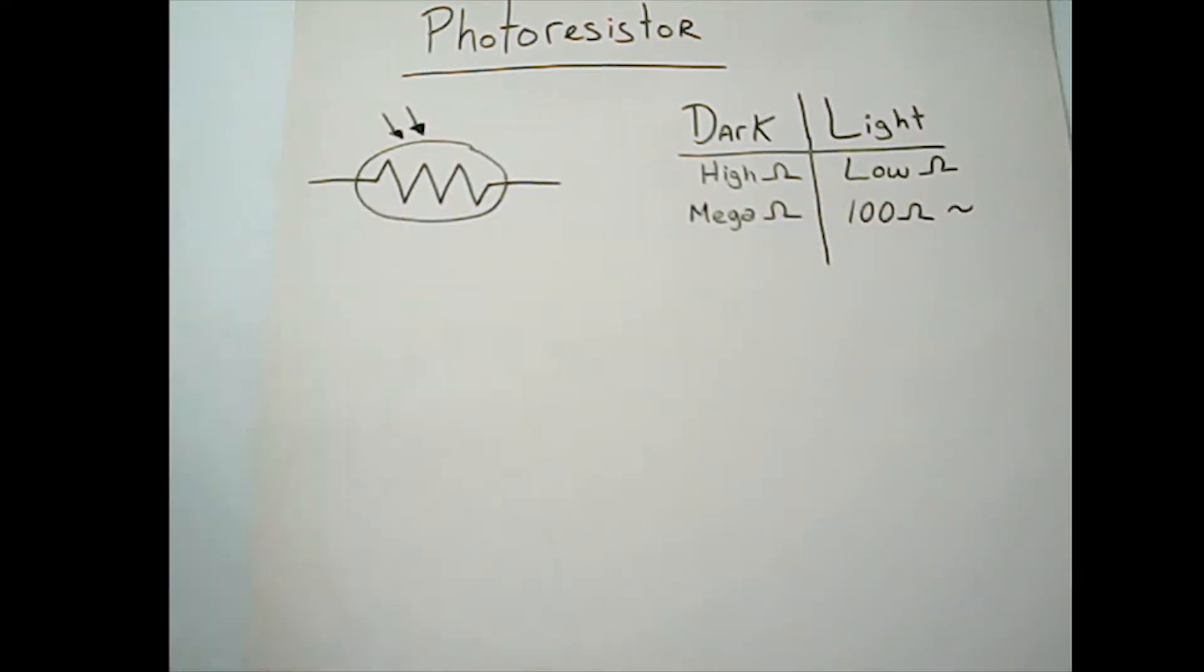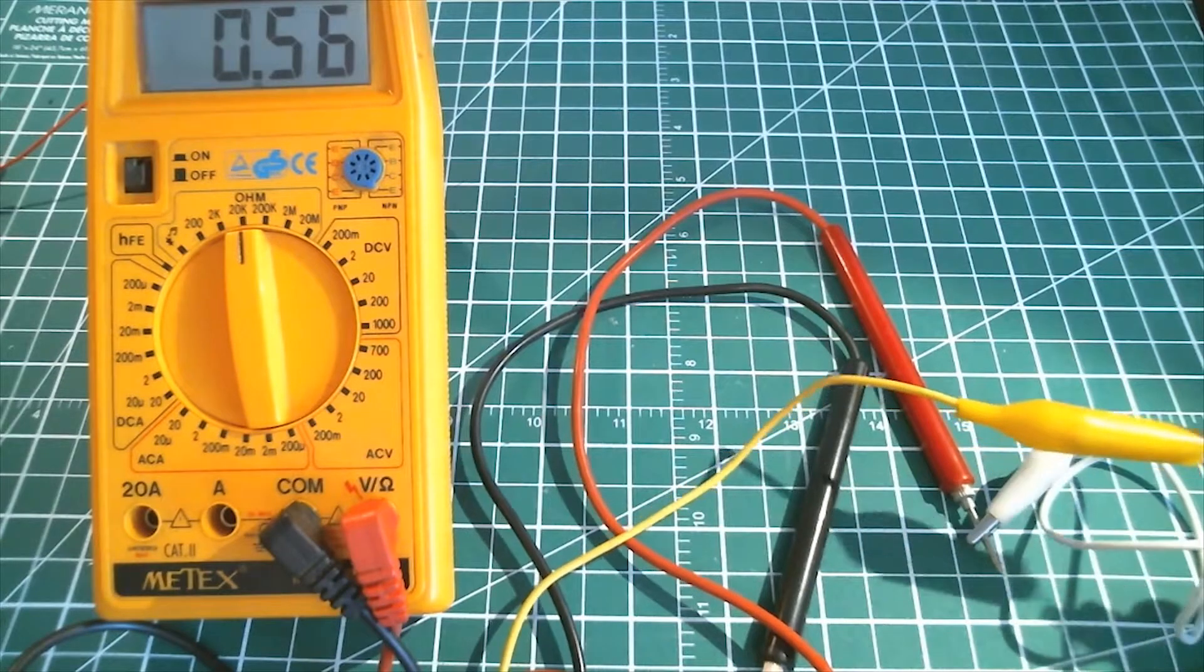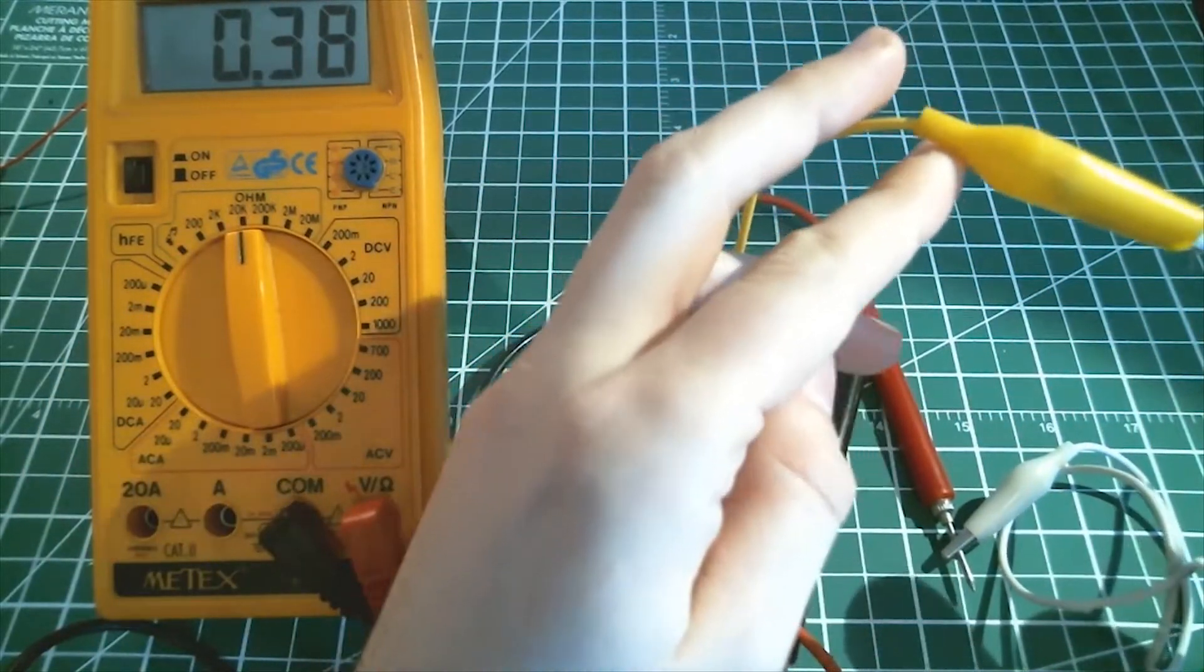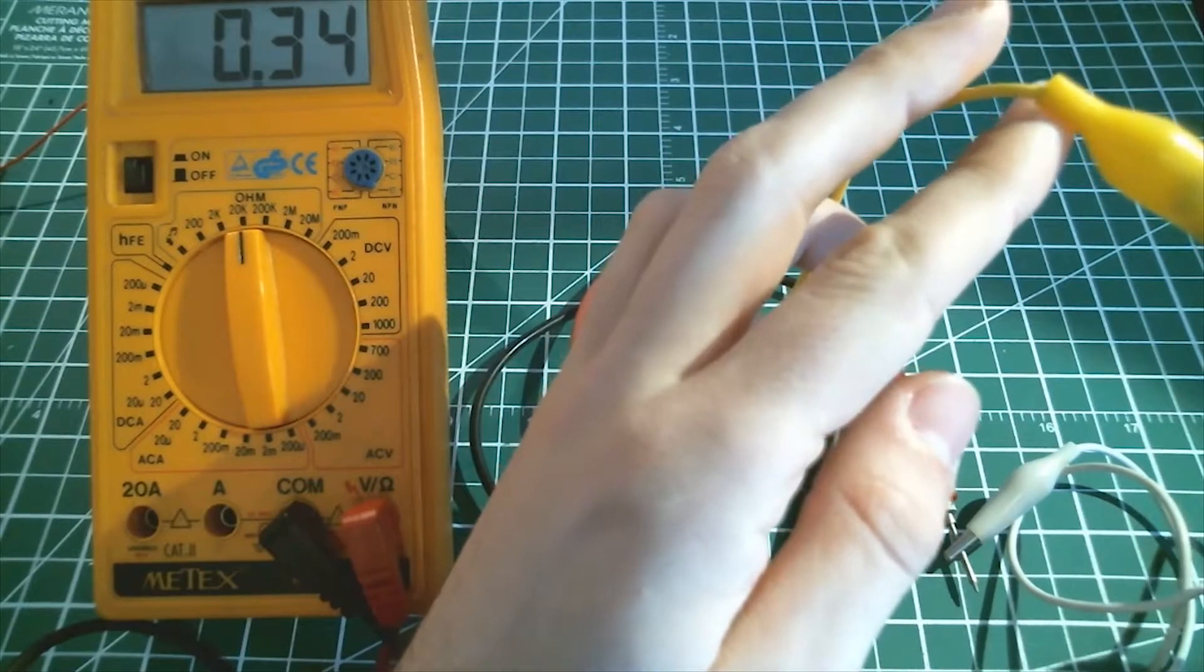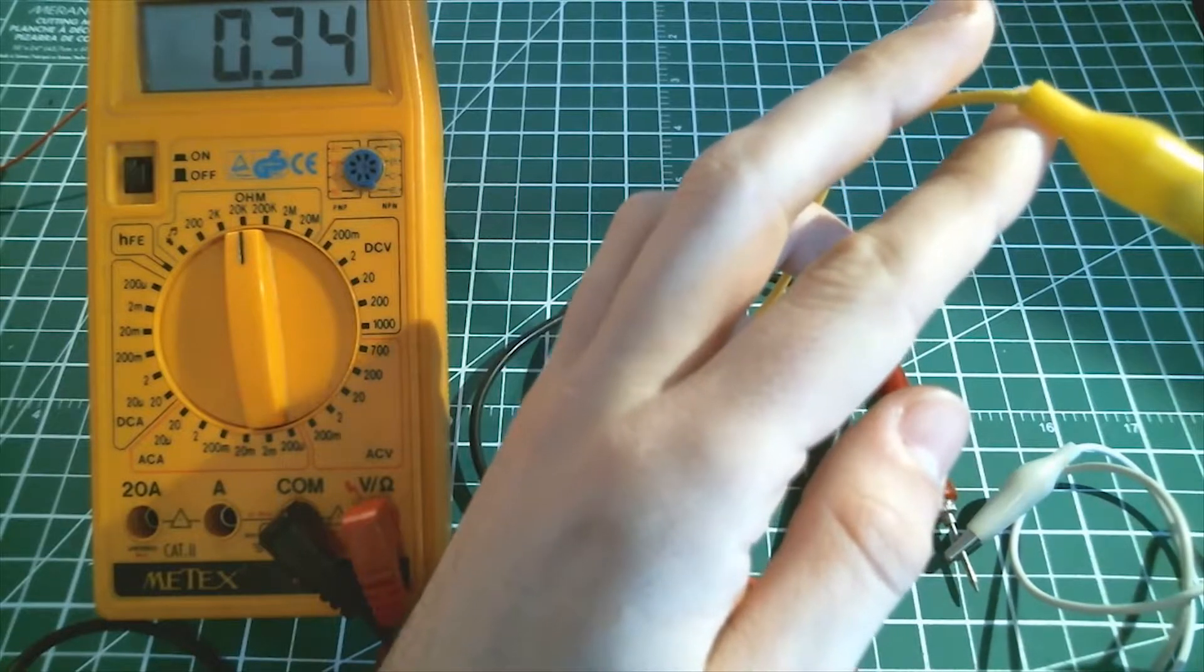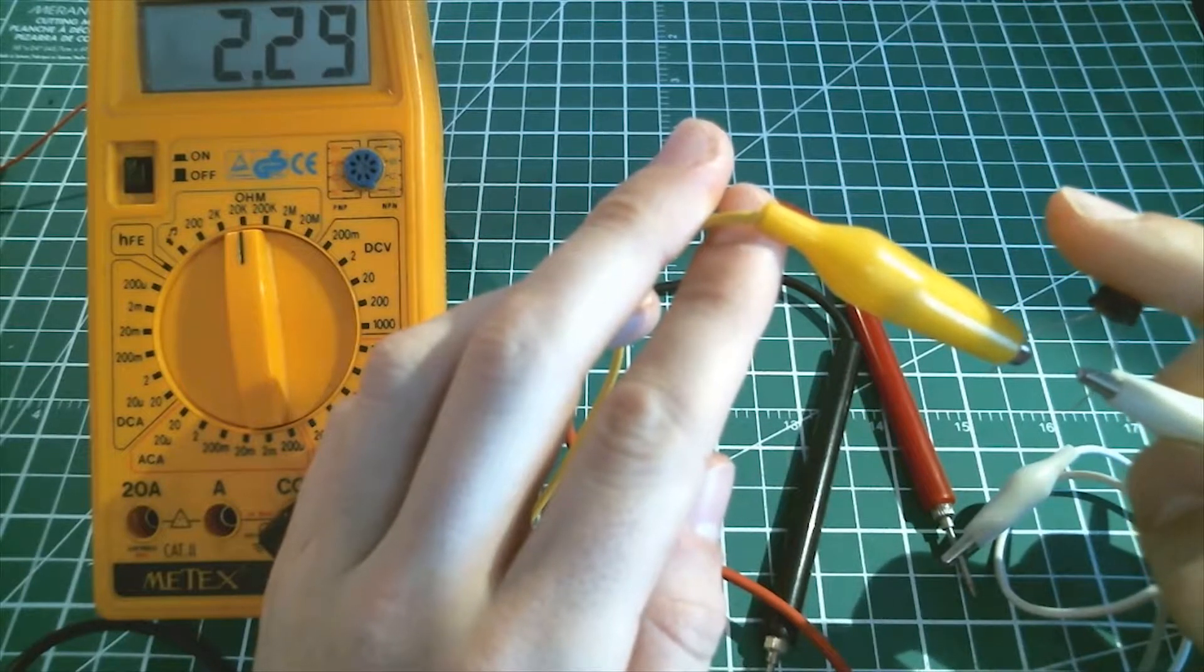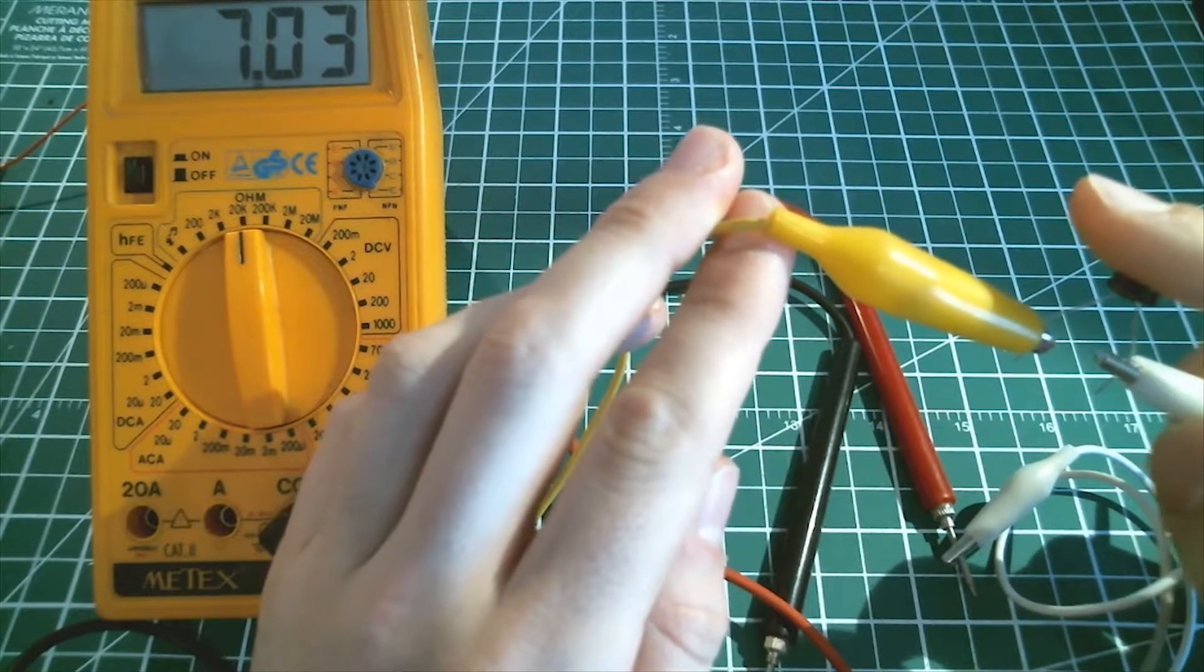I'm going to show you how to measure these values in the ohm meter function. So let's just plug to both legs of your photoresistor and put it to the light, so you know what values it has in the light. Now we know it's about 340 ohms in the light, and in the dark, if I put my finger, we get up to like 7k ohms.